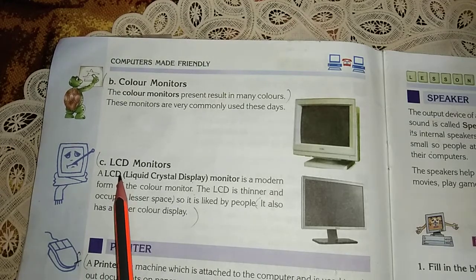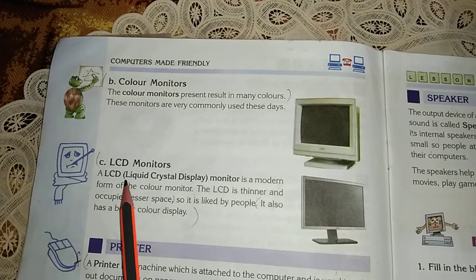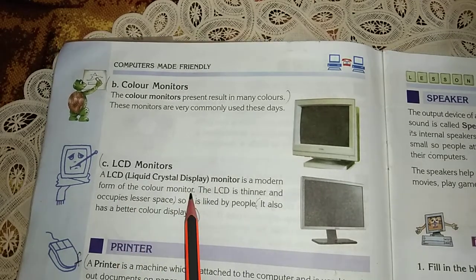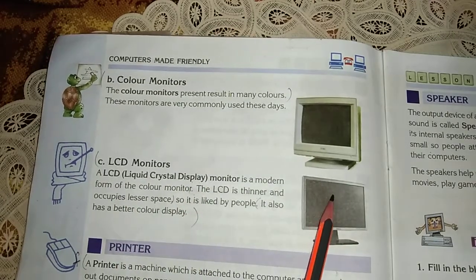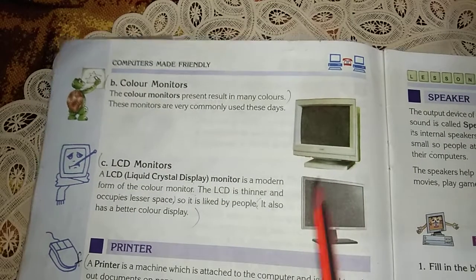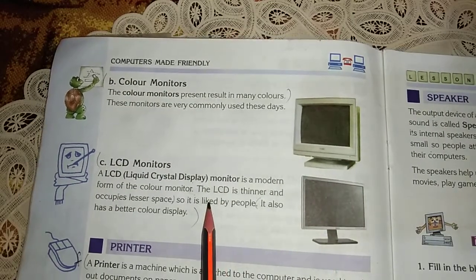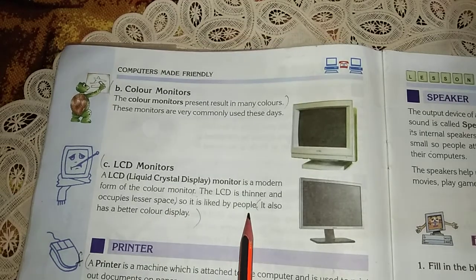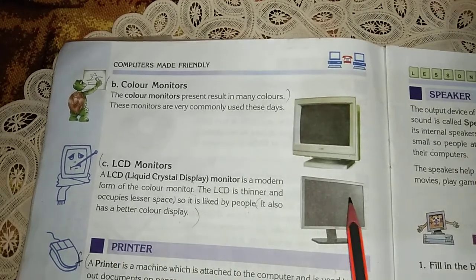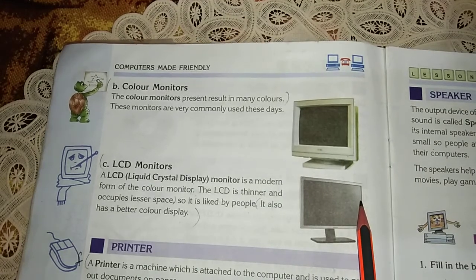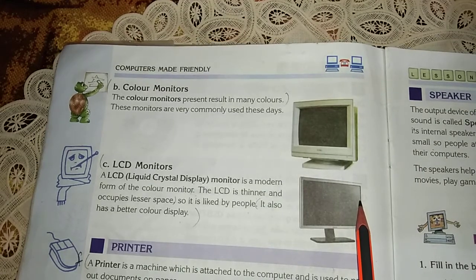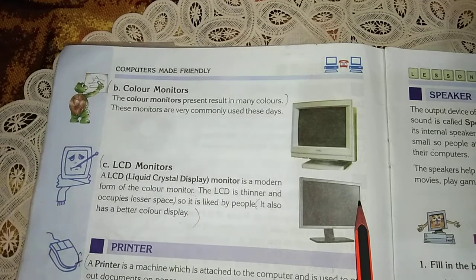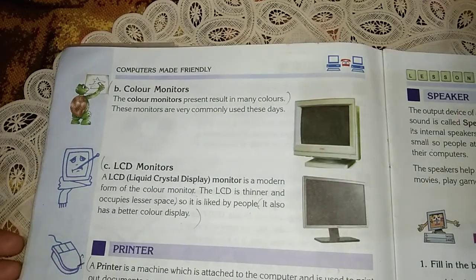The most modern form is the LCD monitor — Liquid Crystal Display monitor — which is a modern form of color monitor. The LCD is thinner and occupies lesser space, so it is liked by people. It also has a better and more vibrant color display.